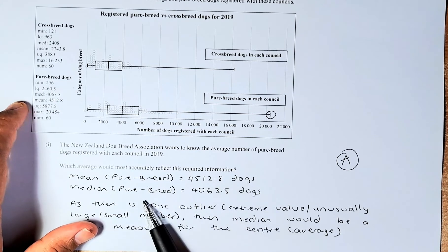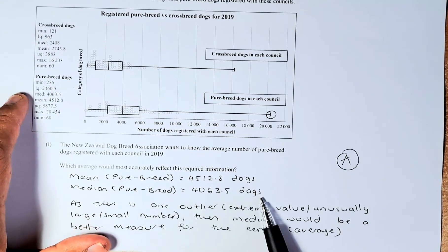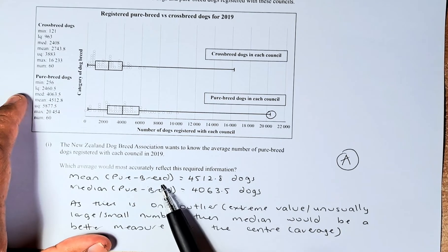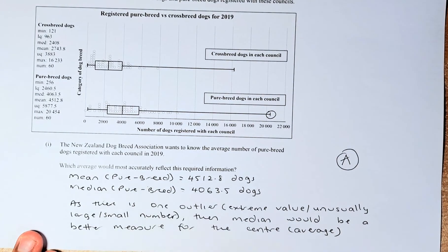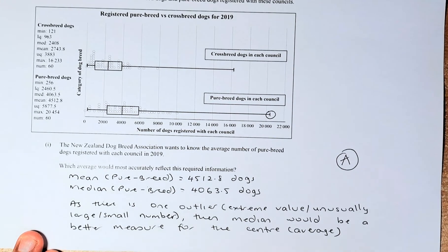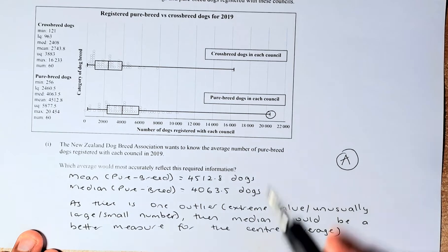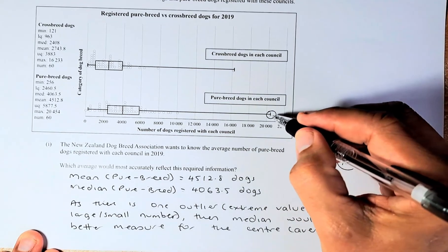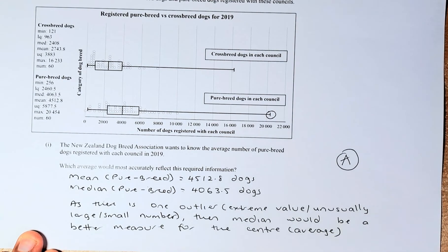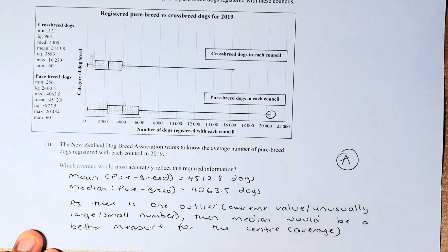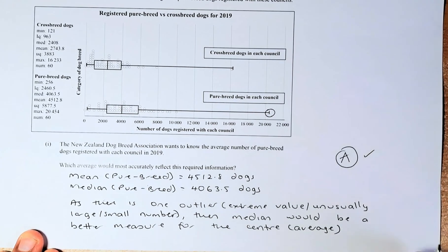The median is 4063.5 dogs. So those are the two averages you can find from the graph. Which one is more appropriate depends on whether there is an extreme value in the data. In this case, there is one extreme value. If there is an extreme value, then the median would be a more appropriate measure. So the answer is that median is the more appropriate measure to calculate centre or average. If you can do that, you get achieved for this paper.